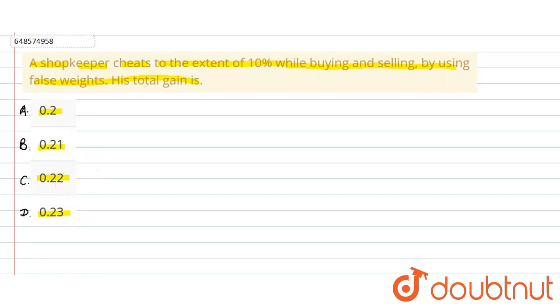The question states that a shopkeeper, at the time of buying and at the time of selling, cheats to the amount of 10% by using false weights. In both cases, while buying and selling, he cheats by 10%. We need to find the total percentage gain.